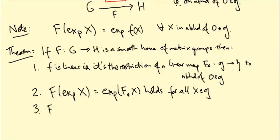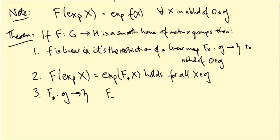Third, this map F star preserves the Lie bracket in the sense that F star of [X, Y] equals [F star(X), F star(Y)].